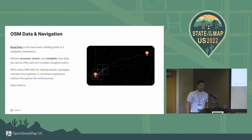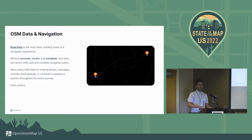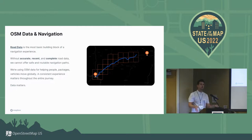Road data is a basic building block — it's an essential component of navigation. Without it, we can't really build a route without knowing where the road is, what the name is, maybe how many lanes there are. It's very difficult to know how to build a route.